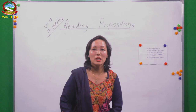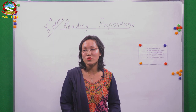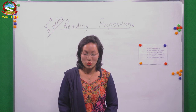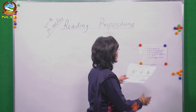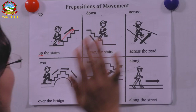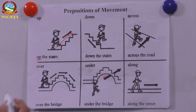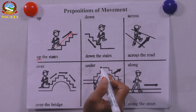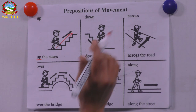Now let's look at a picture presentation of prepositions of movement. Our book deals with three kinds of prepositions: time, place, and movement. Let's start with movement since the picture is given first on page 195. You see a boy who has made different movements — up the stairs, down the stairs. He went up the stairs, down the stairs, across the road, over the bridge, under the bridge, along the street.